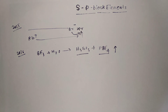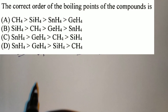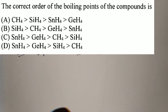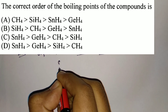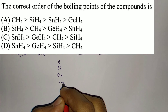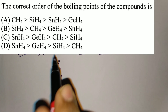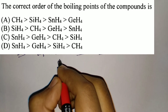Next, coming to JAM 2017. The first question was the correct order of boiling points of the compounds of carbon, silicon, germanium, and tin. You just have to remember the correct order of boiling points of their hydrides — CH4, SiH4, GeH4, SnH4.